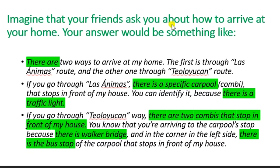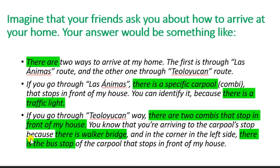Imagine that your friend asks you how to arrive at your home, and your answers will be something like: 'There are two ways to arrive at my home — the first is through Las Ánimas route and the other through the Toloiyucan route.' If you go through Las Ánimas, there is a specific carpool combi that stops in front of my house; you can identify it because there is a traffic light. If you go through the Toloiyucan way, there are two combis that stop in front of my house. You know you are arriving at the stop because there is a pedestrian bridge, and on the left corner there is the bus stop.